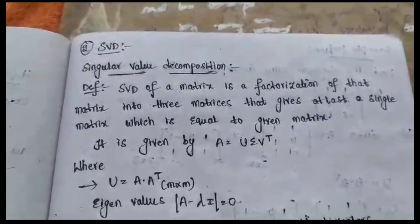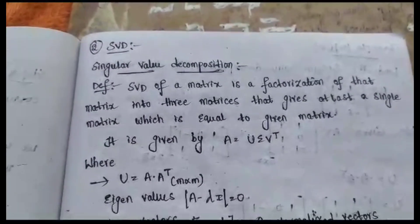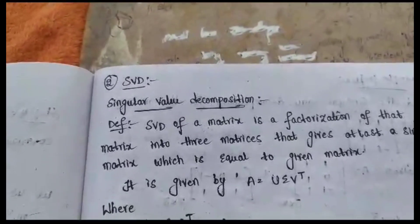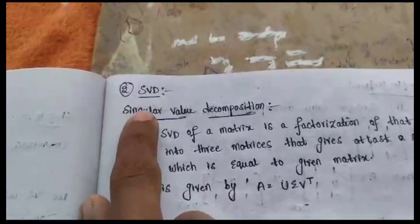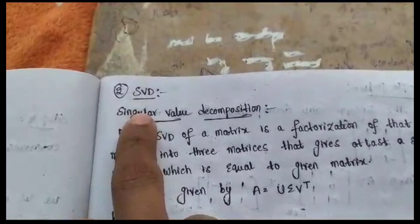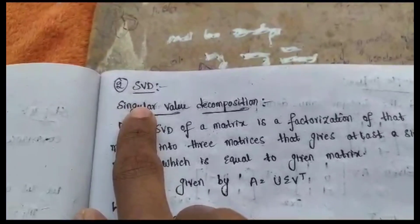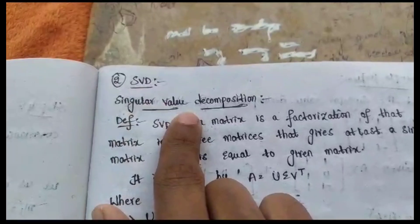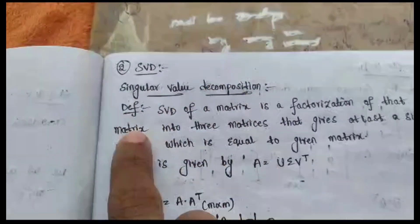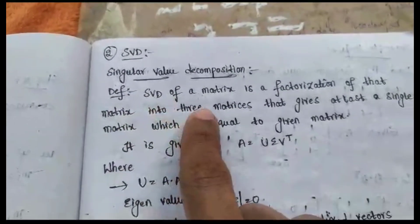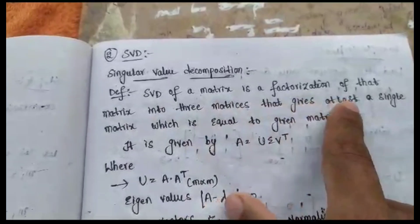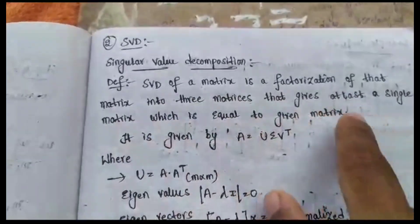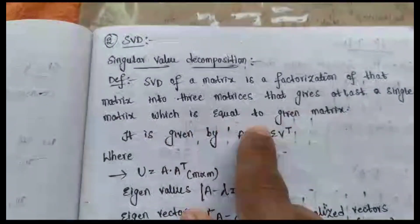In the previous video we discussed about PCA. Now in this video we are discussing the second concept of data representation: SVD, which stands for Singular Value Decomposition. The definition of SVD is the factorization of a matrix into three matrices.